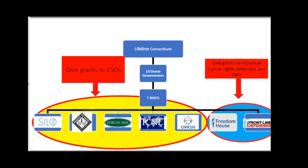These seven partners all have their own grants — the CIVICUS grant is called the crisis response fund. If you reach out to CIVICUS and you're an individual needing a grant that CIVICUS isn't able to assist with, we would refer you to Freedom House or Frontline Defenders. If you are an organization that meets our mandate, we'd happily proceed with processing your grant.